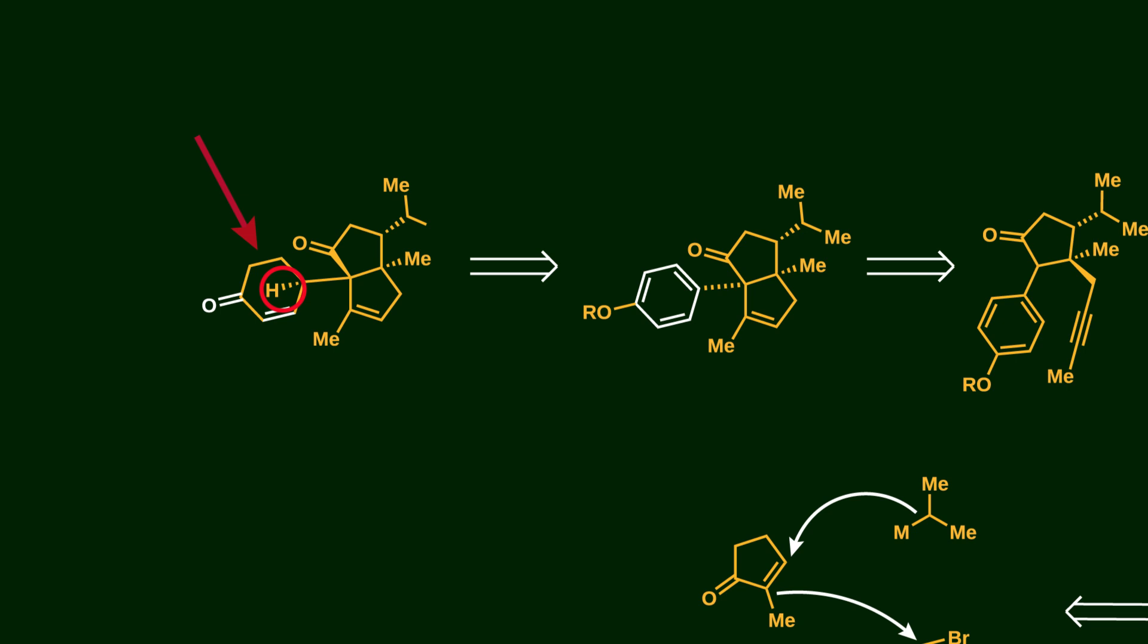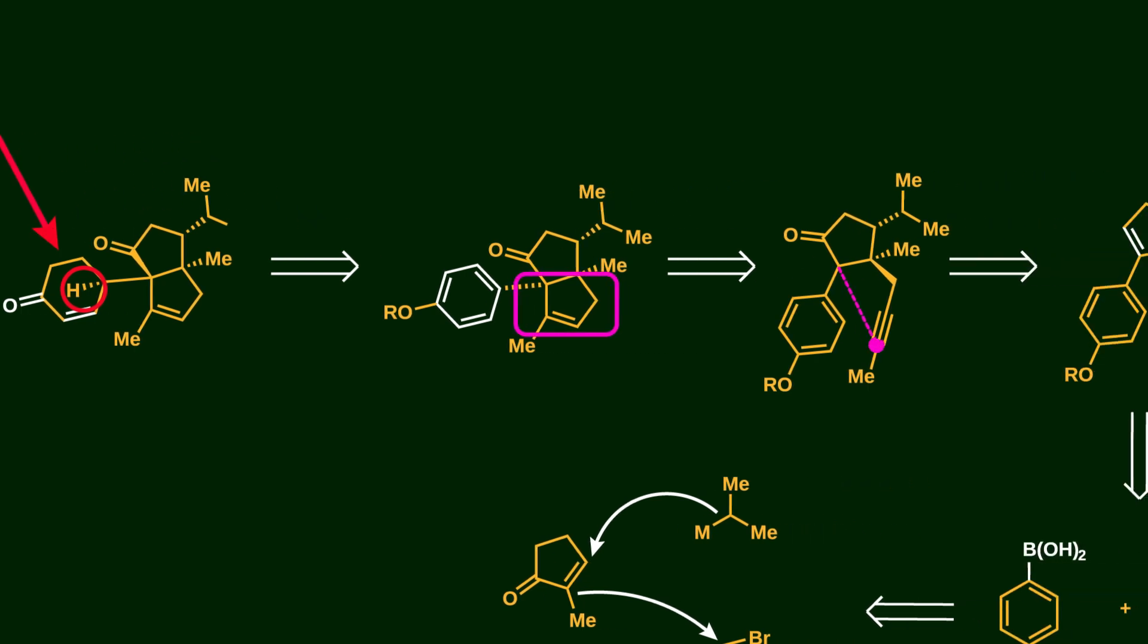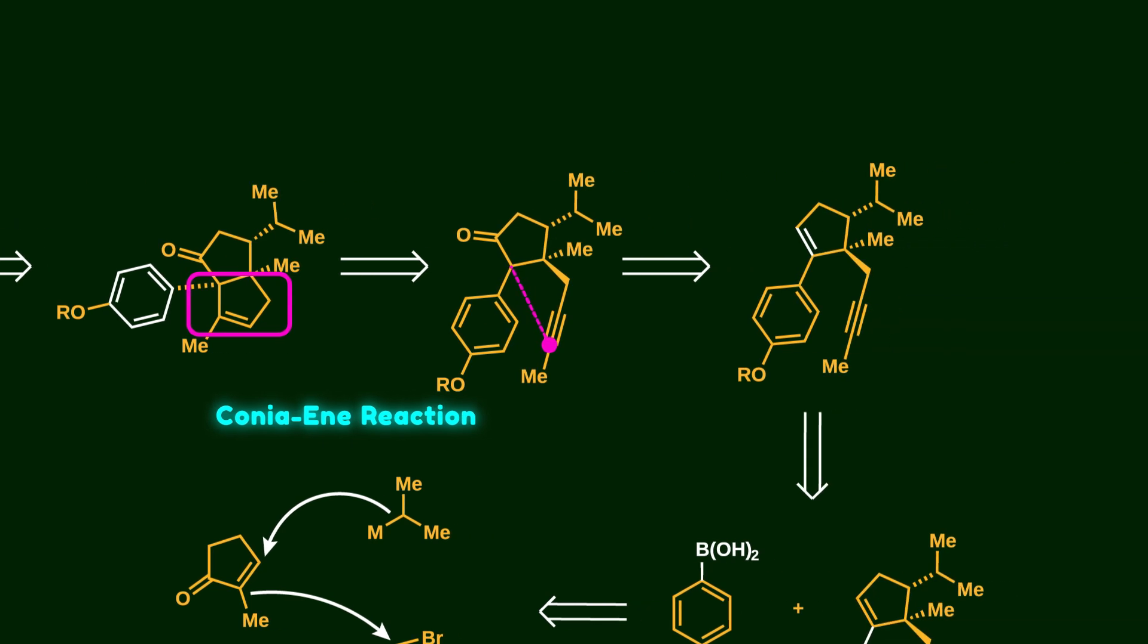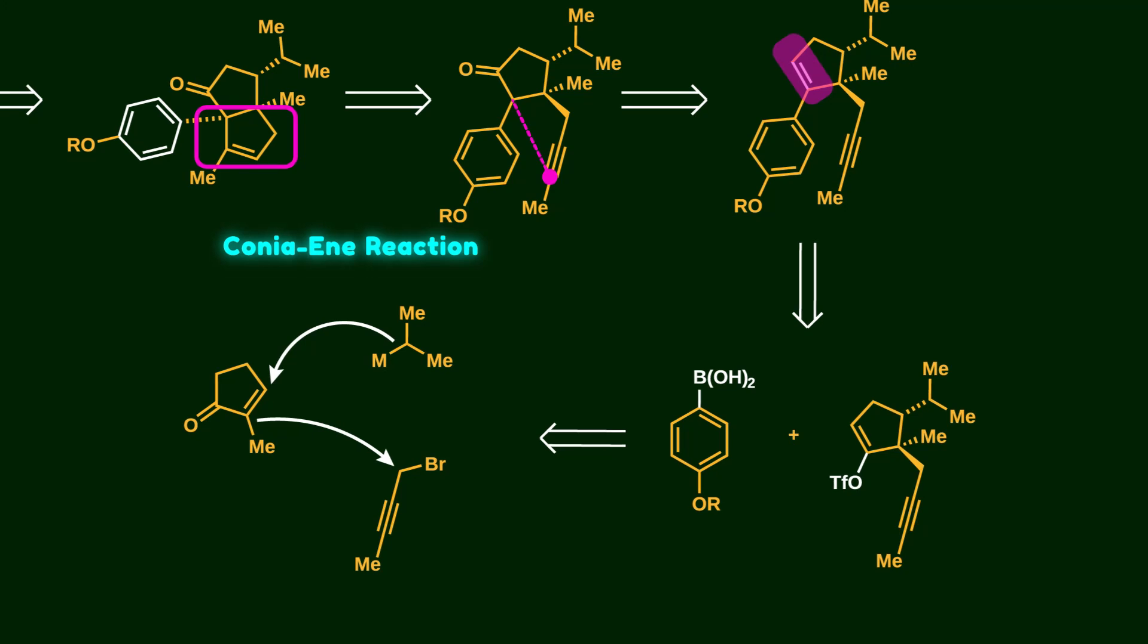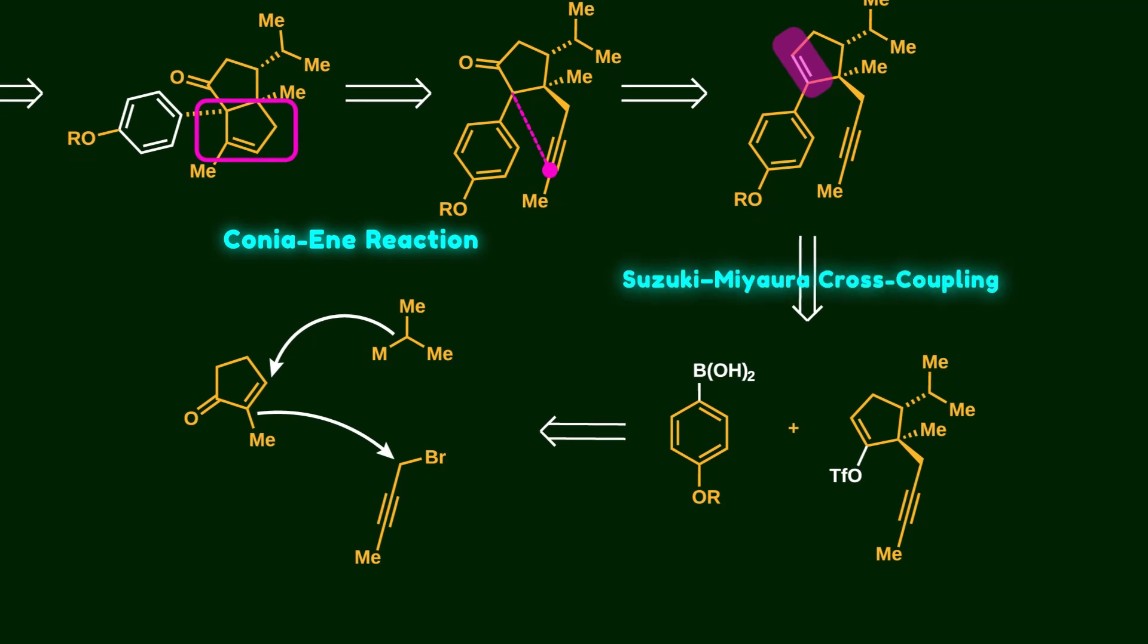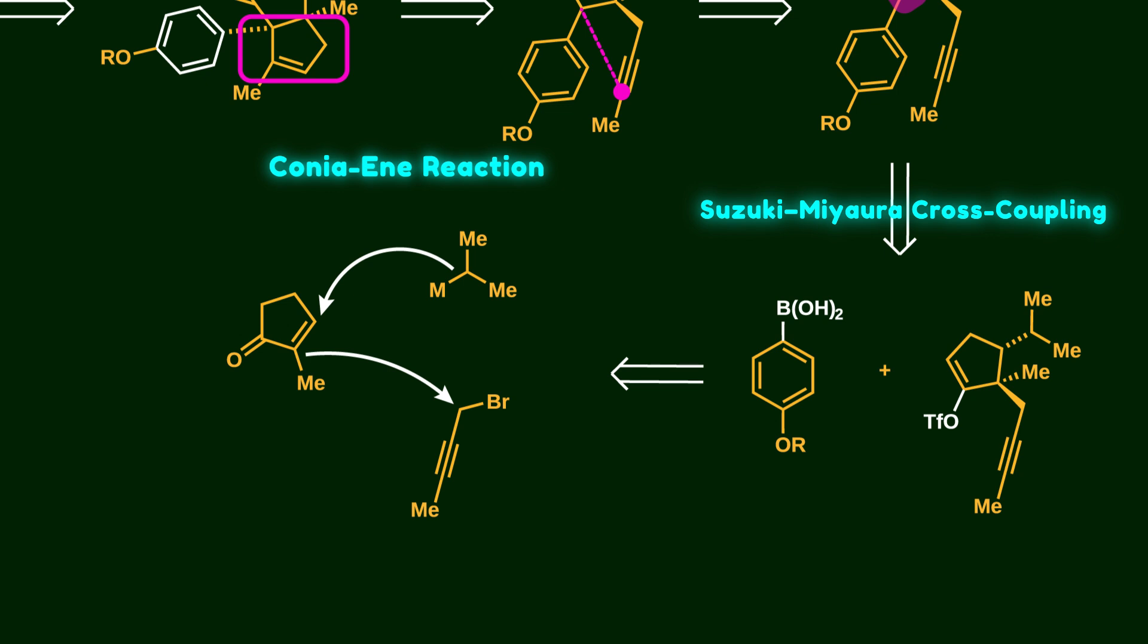The five-membered ring can be constructed by a Conia-ene reaction of an alkyne. The ketone can be installed on the five-membered ring using a double bond. The six- and five-membered rings can be assembled through a Suzuki cross-coupling between a boronic acid and vinyl triflate. This triflate is traced back to cyclopentanone, and the substituents are installed on the ring by a sequence of enantioselective addition of an isopropyl nucleophile and 1-bromo-2-butyne.